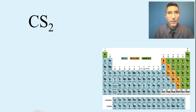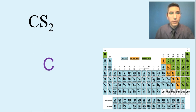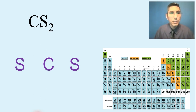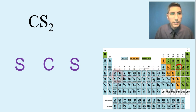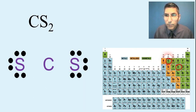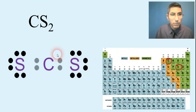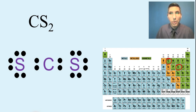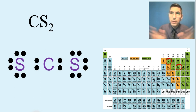Let's try carbon disulfide. Once again, carbon is the central atom, so it goes in the middle, with the sulfurs surrounding it. I start with the outside and work inward. Sulfur has six valence electrons, so I draw six dots around each sulfur. Carbon has four valence electrons in group 14, so I put four dots around the carbon. But checking the octet rule — does everything have eight? No: the sulfurs both have eight as drawn, but the carbon only has four, so we have to start moving some dots around.